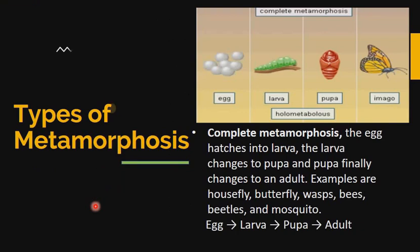We have two types of metamorphosis. The first one is called complete metamorphosis, or holometabolous. Remember that holo is the same thing as complete. In complete metamorphosis we have four stages to complete the life cycle of the organism.